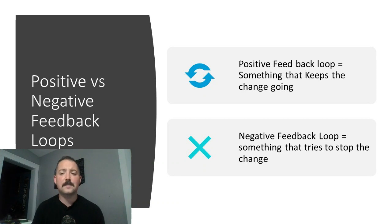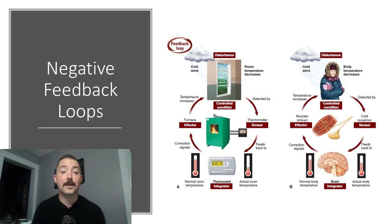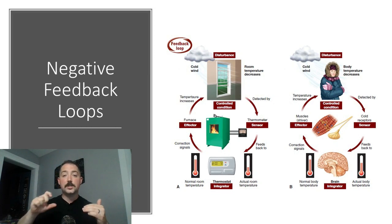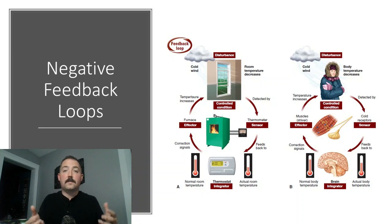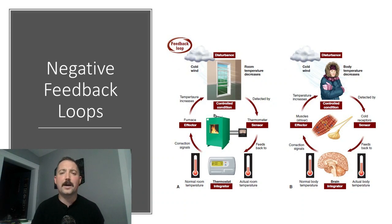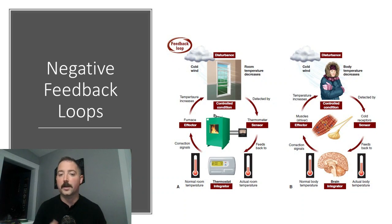An example of a negative feedback loop would be the thermostat in your house. If the house gets cold, a switch inside your thermostat flips and turns on the heat. The heater warms up the house, and then as soon as it's warm enough, that sensor turns off and the heat shuts off. It's the same kind of thing in your body — if we get cold, a sensor in our brain says to start shaking or shivering, and that warms us up. Once we're warm, the brain tells the muscles to relax.